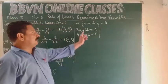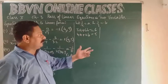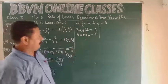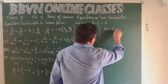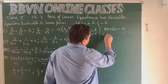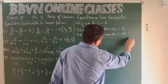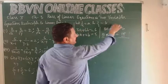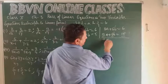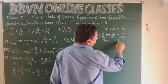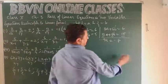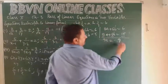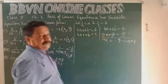To equalize the B coefficients, multiply the second equation by 3: giving 12a + 6b = 15. The first equation remains as it is: 3a + 6b = 6. Subtracting, the 6b terms cancel. 12a - 3a = 9a, and 15 - 6 = 9. So 9a = 9, giving a = 1.